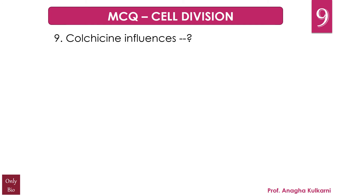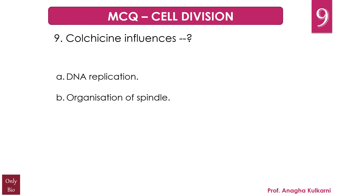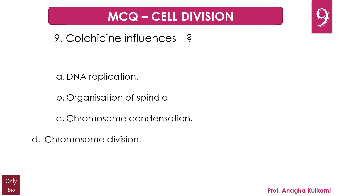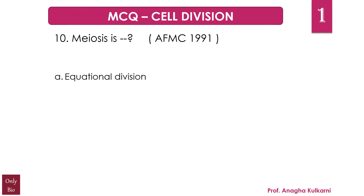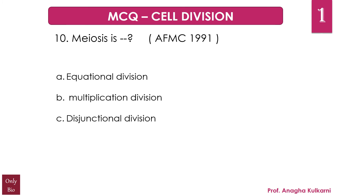The next question is: colchicine influences — A) DNA replication, B) organization of spindle, C) chromosome condensation, D) chromosome division. The correct answer for this question is B) organization of spindle.